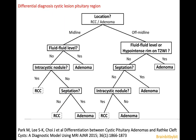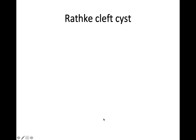In the top differential diagnosis of a cystic macroadenoma or a macroadenoma with hemorrhage is a Rathke's cleft cyst. There is a nice flow chart which comes down to looking for signs of hemorrhage such as fluid-fluid levels or septation, which are more in favor of an adenoma, whereas an intracystic nodule is more in favor of a Rathke's cleft cyst. We are going to discuss Rathke's cleft cyst in the next segment, so I hope you will stay tuned.